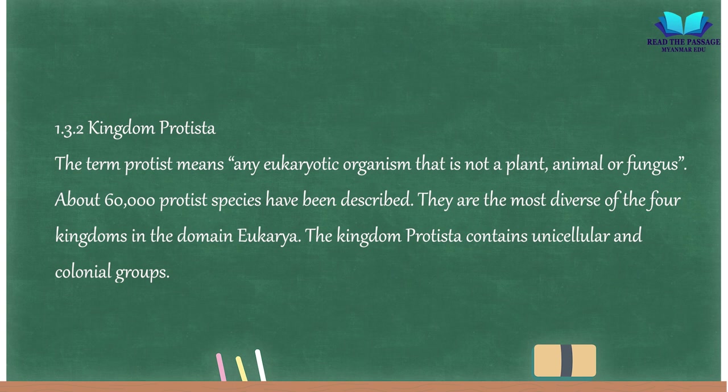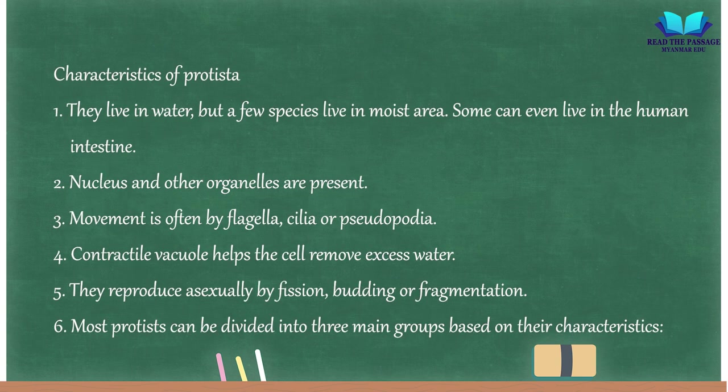1.3.2 Kingdom Protista. The term protist means any eukaryotic organism that is not a plant, animal, or fungus. About 60,000 protist species have been described. They are the most diverse of the four kingdoms in the domain Eukarya. The kingdom Protista contains unicellular and colonial groups. Characteristics of Protista: (1) They live in water, but a few species live in moist areas. Some can even live in the human intestine.